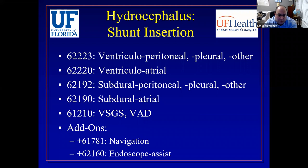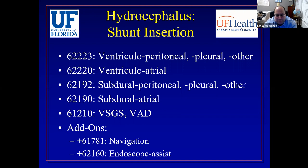Transitioning to hydrocephalus coding: for shunt insertion, the typical code is 62223, which covers ventricular-peritoneal, ventricular-pleural, and other terminations. That's why 62223 can be used for VSGS if you want — the subgaleal terminus counts as 'other' in coding language — but I think it's more advantageous to use 61210. Ventricular-atrial has its own code (62220) because of the extra work to get the atrial catheter in. Subdural-peritoneal and subdural-atrial have separate codes. I mentioned 61210 for VSGS and VAD.